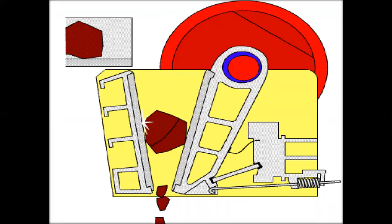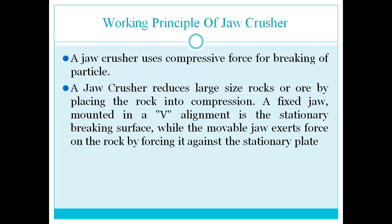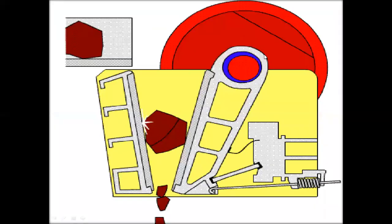This is the image of the jaw crusher. Here you can observe the working — the input of the materials and the size of the aggregates can be put in here. The jaw crusher reduces the size of these aggregates by compression. The discharge can be collected here, and the size of the aggregates can be varied.